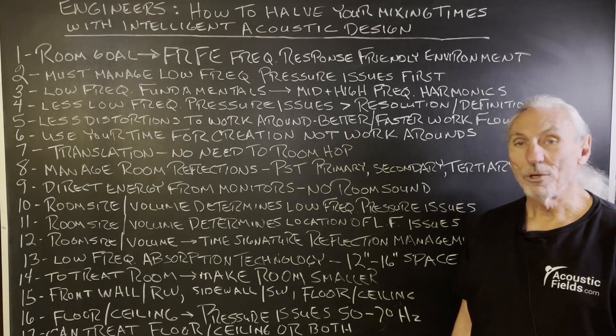Low frequency pressure — the room size and volume — determines the location of low frequency pressure issues. Every wall is different. You could have a 30-cycle problem on one wall, 40-cycle on another, 50 on another, 60-70 cycle floor to ceiling. Reflection management is critical also, because the closer you're sitting to a room boundary surface, the more attention must be paid to reflections interfering with your direct sound. Size and distance also factor into placing diffusion. Diffusion is a technology to make a small room sound larger, but you need distance for that energy to fully form.